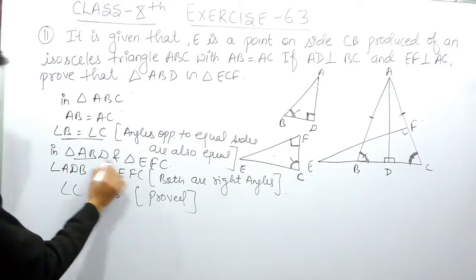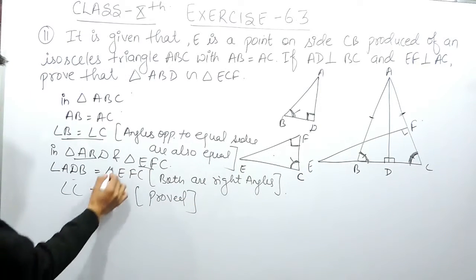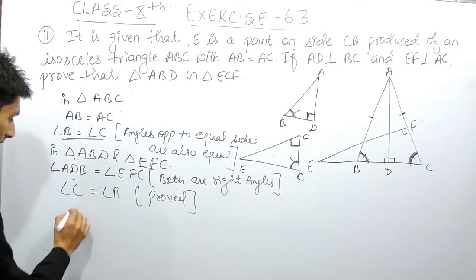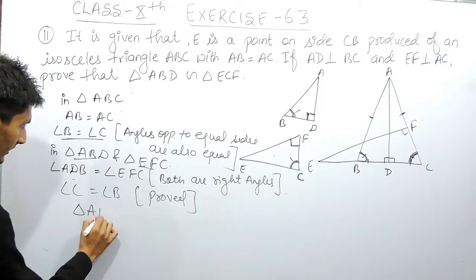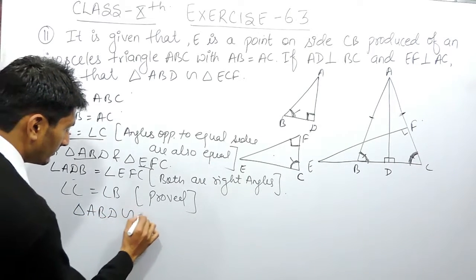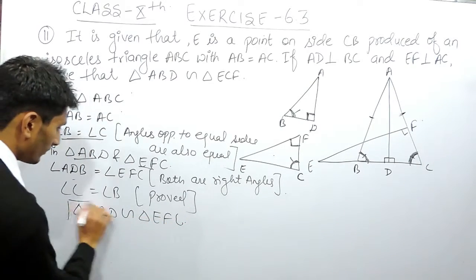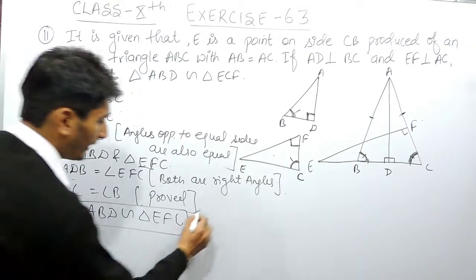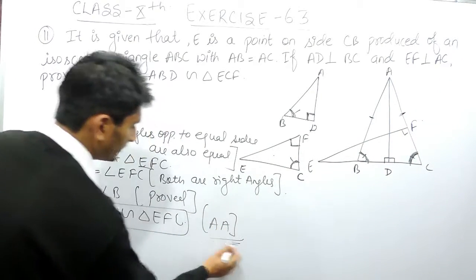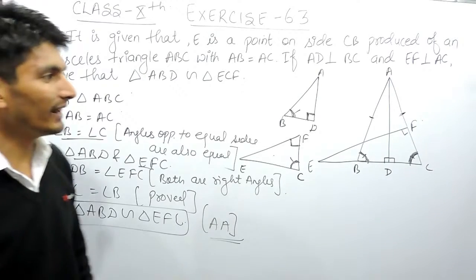So in these two triangles, two angles are equal, and if two angles are equal, then we can confirm that triangle ABD must be similar to triangle EFC. This can be concluded by angle-angle property of similarity.